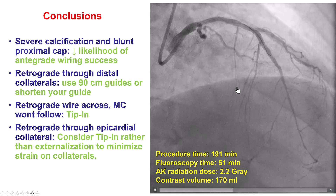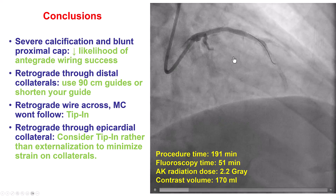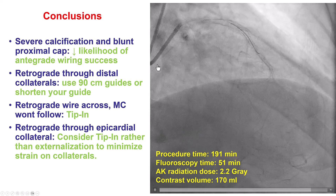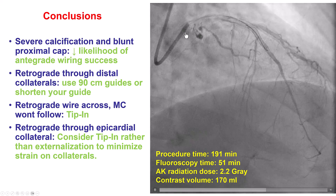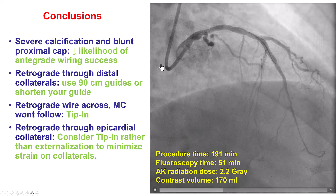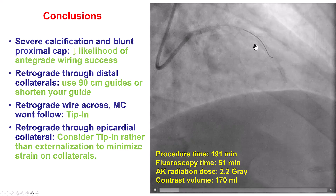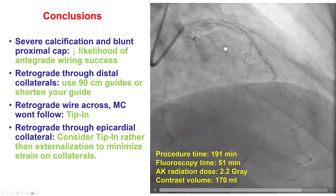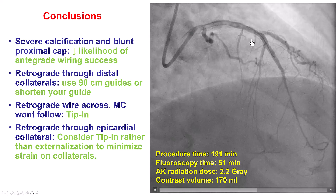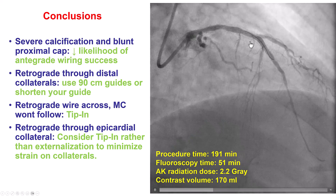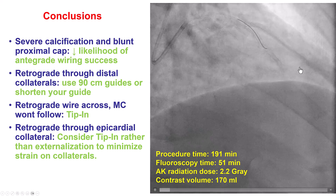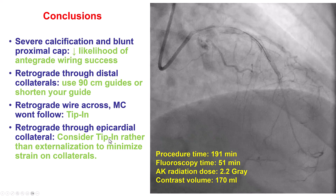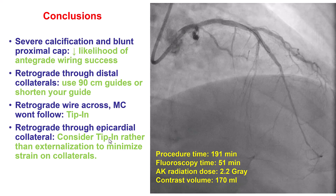In this case, we ran out of microcatheter length, but we were able to cross true-to-true and perform the tip-in technique — advancing an antegrade microcatheter and threading the retrograde guide wire inside it. The antegrade microcatheter was then advanced across the CTO and an antegrade guide wire was placed. Importantly, the tip-in technique minimizes strain on epicardial collaterals compared to externalization, thereby reducing the risk of collateral injury and perforation.